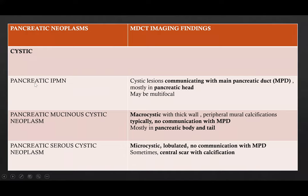In cystic pancreatic neoplasms: pancreatic IPMN presents as a cystic lesion communicating with the MPD, mostly located in the pancreatic head, and may be multifocal. Pancreatic mucinous cystic neoplasms present as macrocystic masses with thick walls and peripheral eggshell calcifications, typically showing no communication with the MPD, mostly located in the pancreatic body and tail. Pancreatic serous cystic neoplasms present as microcystic lobulated masses with no communication with the MPD, and sometimes show a central scar with calcification allowing for a more specific diagnosis.